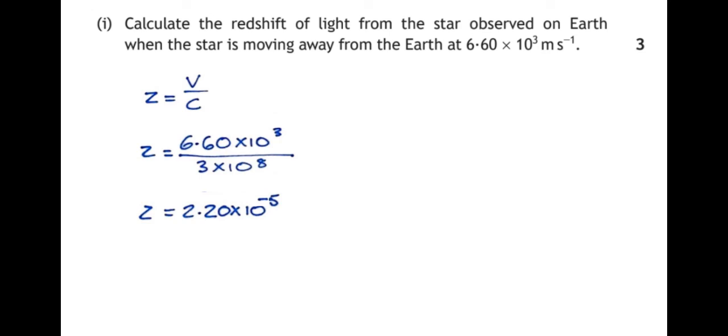Red shift is just a factor. It has no units. So we don't need to write any units down here. If we think about the formula, it's meters per second over meters per second. So the two meters per second units cancel each other out.